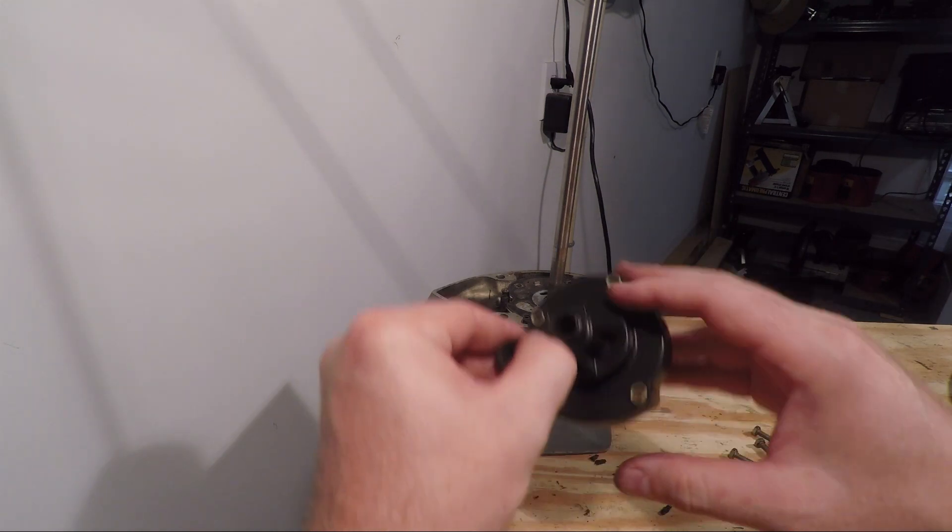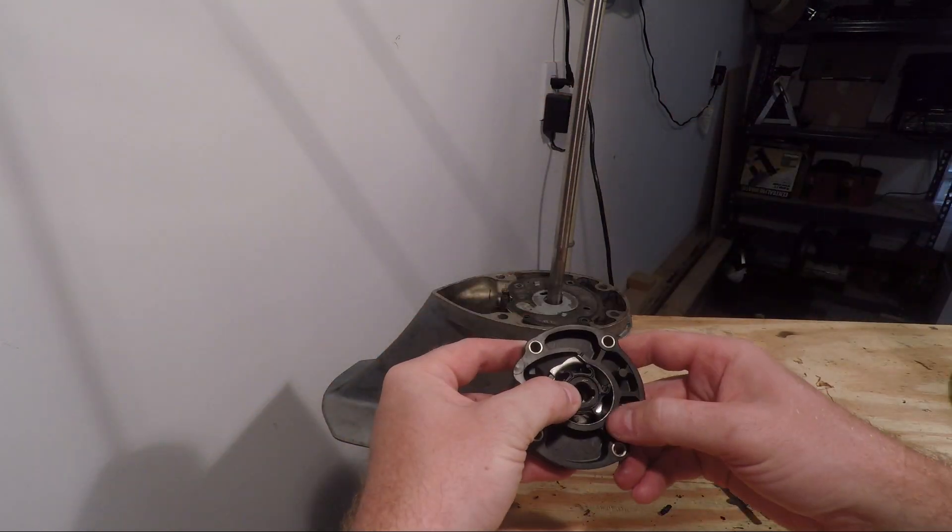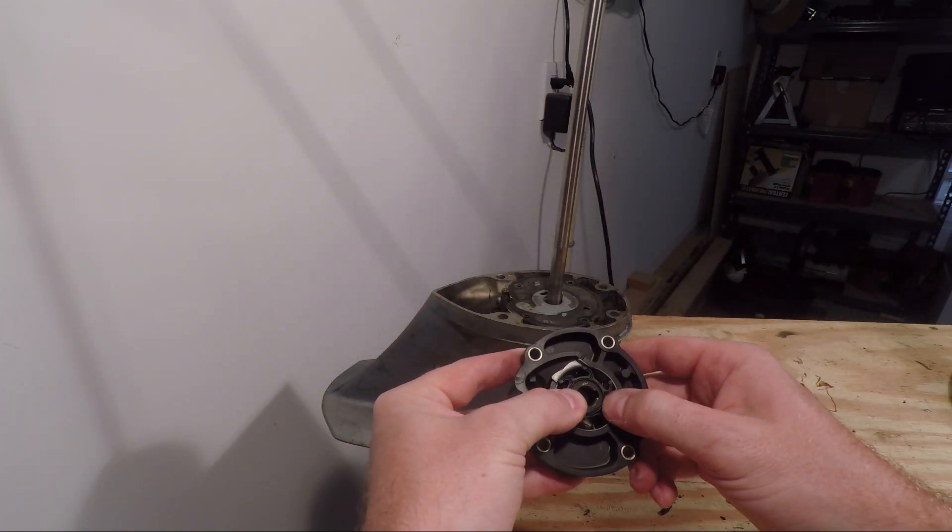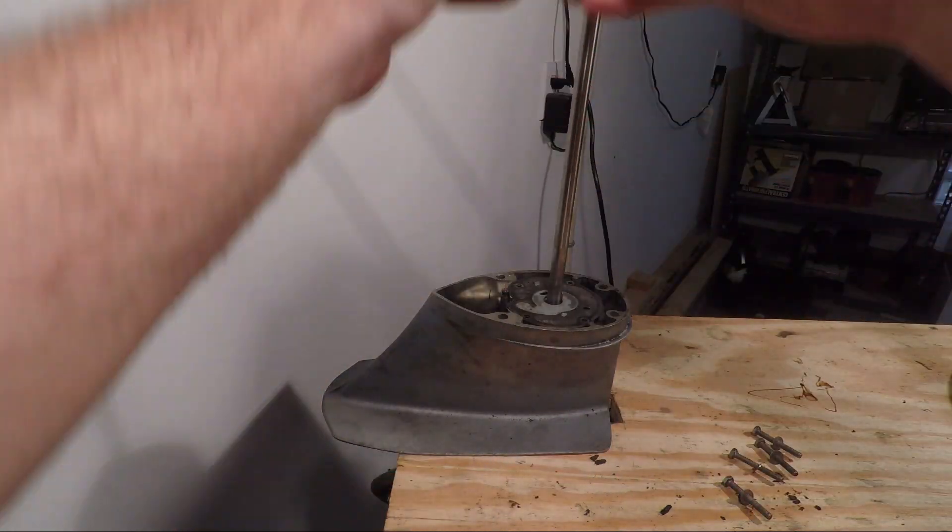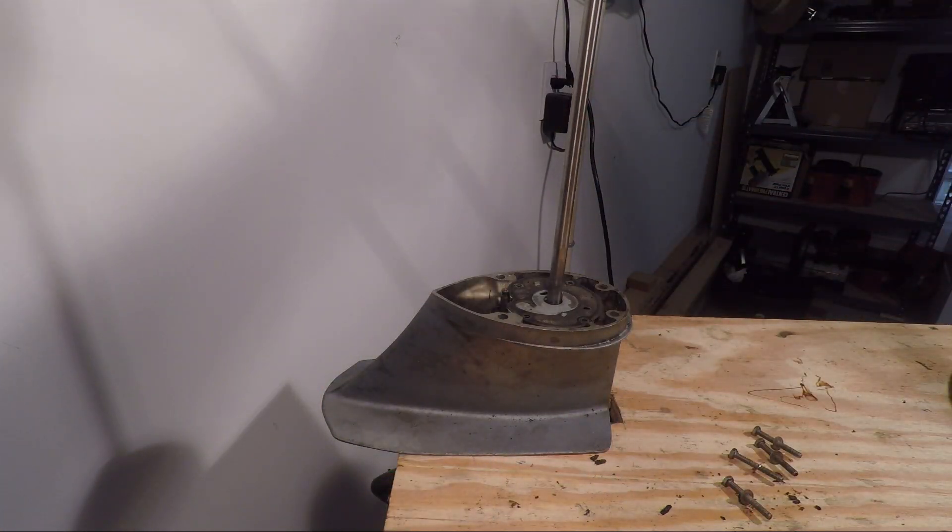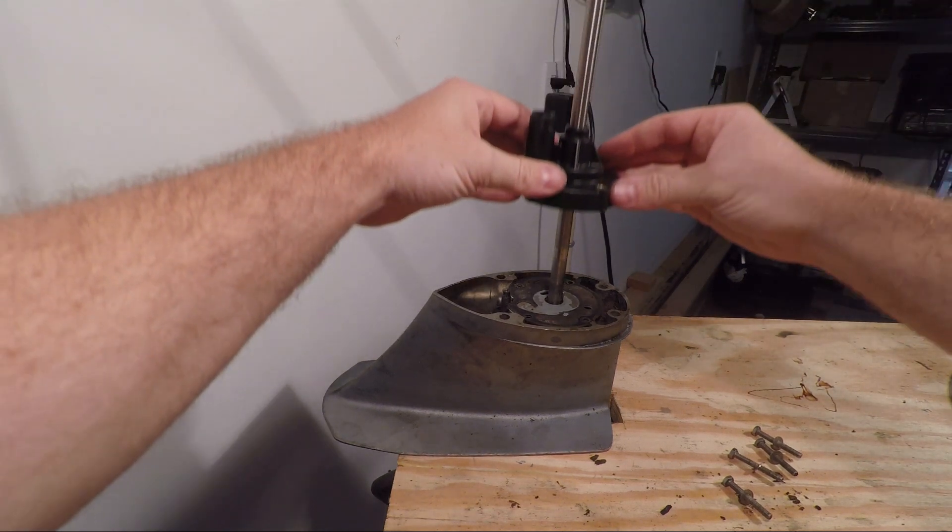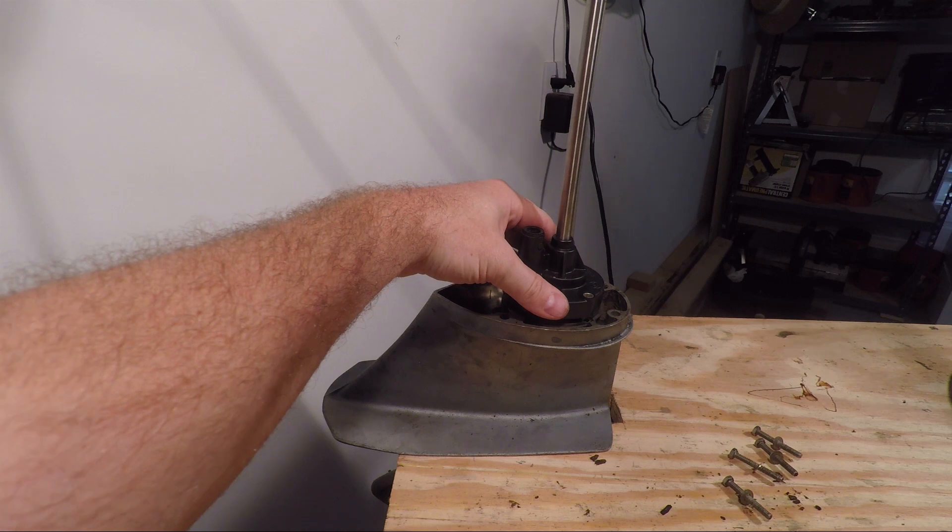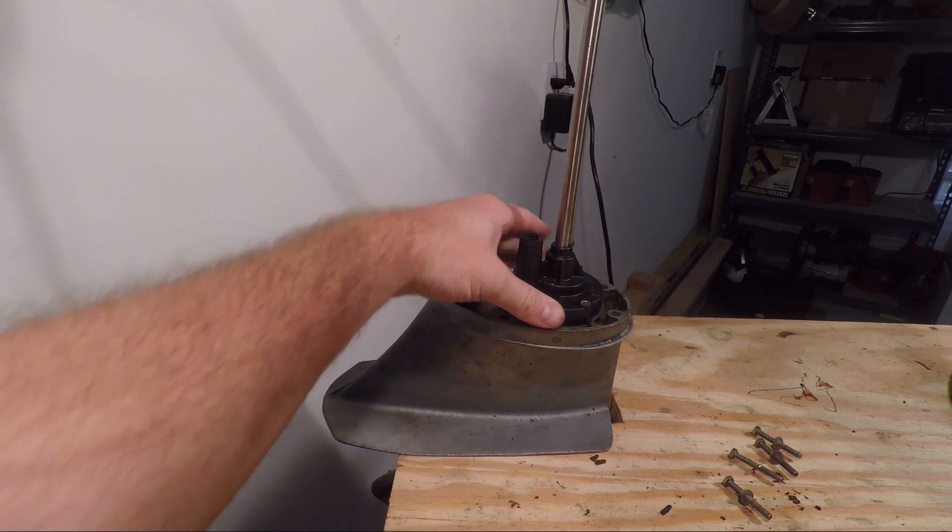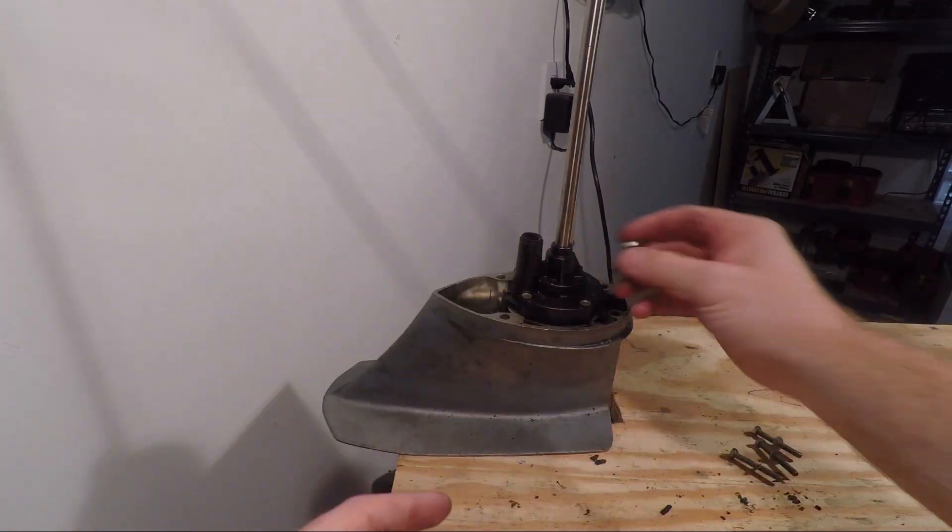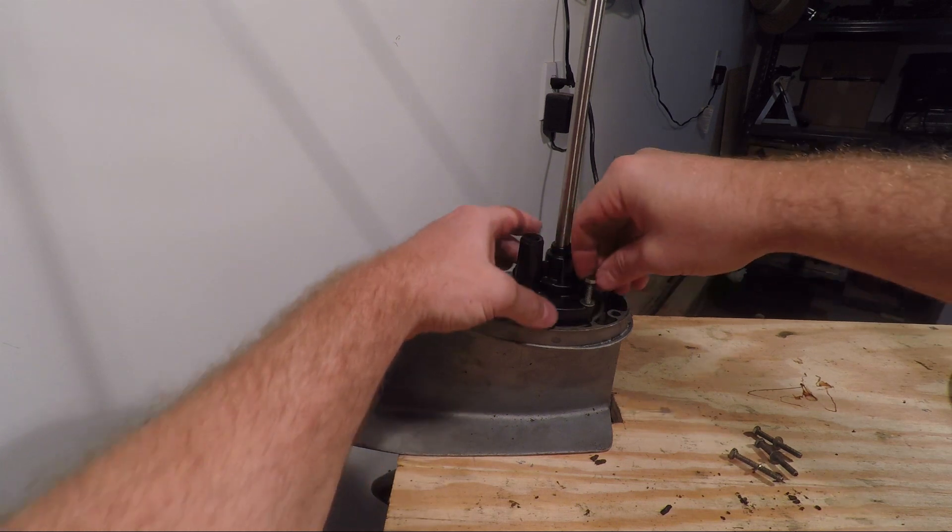Once you get that aligned and you got everything squared away, slide the entire assembly back over the top. It should click on down. Now replace the fasteners.